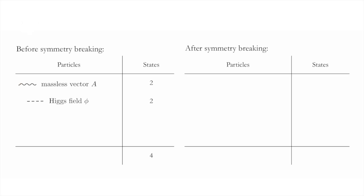After symmetry breaking, the scalar field phi takes on an expectation value, which breaks the symmetry. Consequently, the vector field A becomes massive. A massive vector field has three polarizations. The total number of polarizations in the model has to be the same after symmetry breaking as before — four polarizations. So after symmetry breaking, there must be one polarization left in the scalar field. This we interpret as a physical Higgs boson.